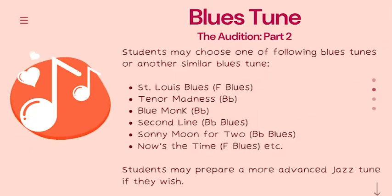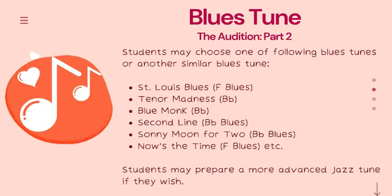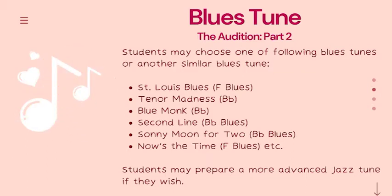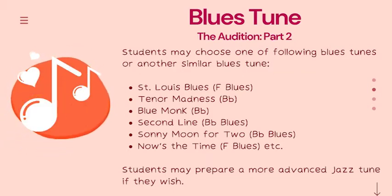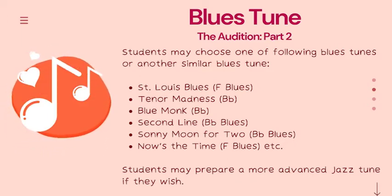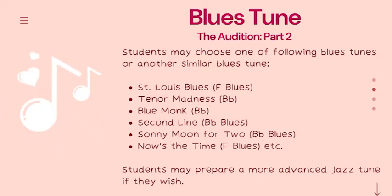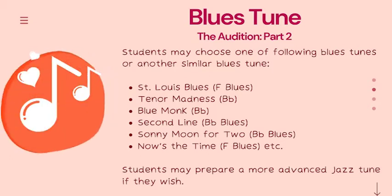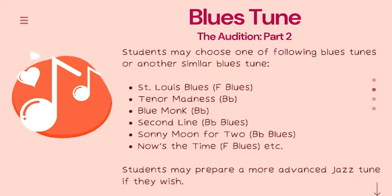Audition Part 2 - Blues tune: Students may choose one of the following blues tunes or another similar blues tune: St. Louis Blues, Tenor Madness, Blue Monk, Second Line, Sunny Moon for Two, or Now the Time. Students may prepare a more advanced jazz tune if they wish, but at the very least they must be able to improvise over the basic 12-bar blues form.